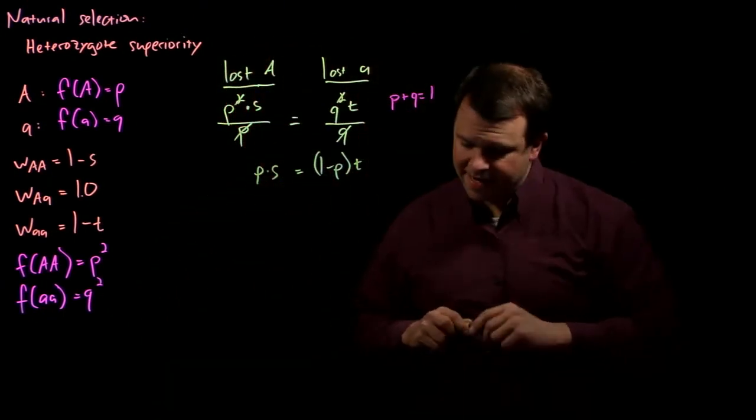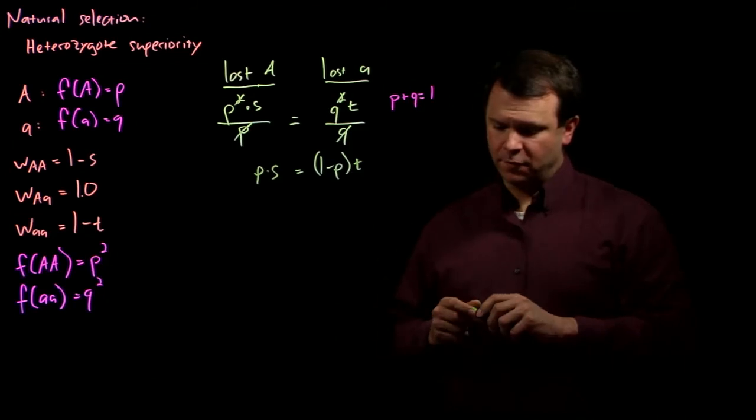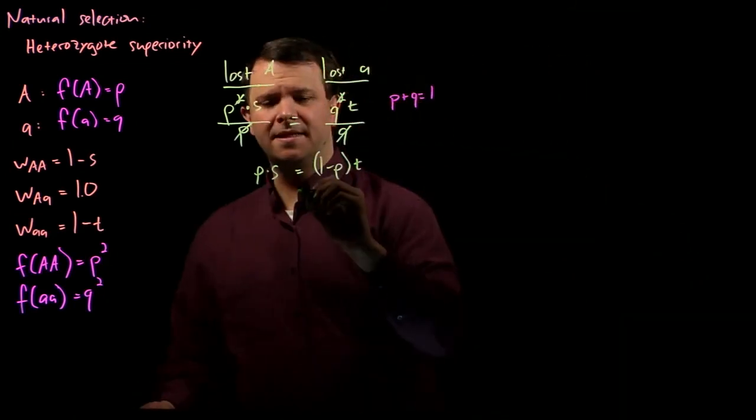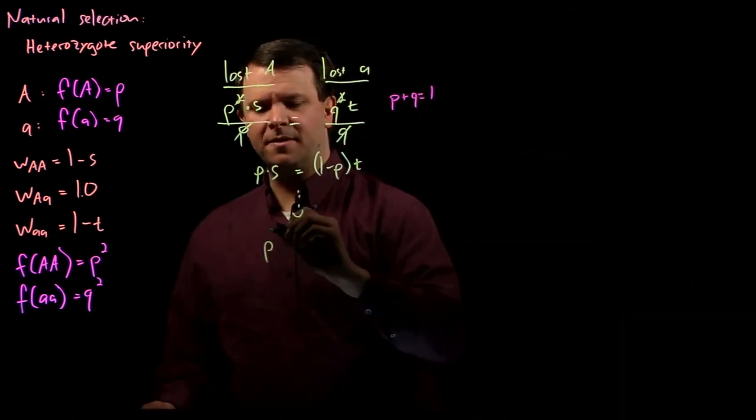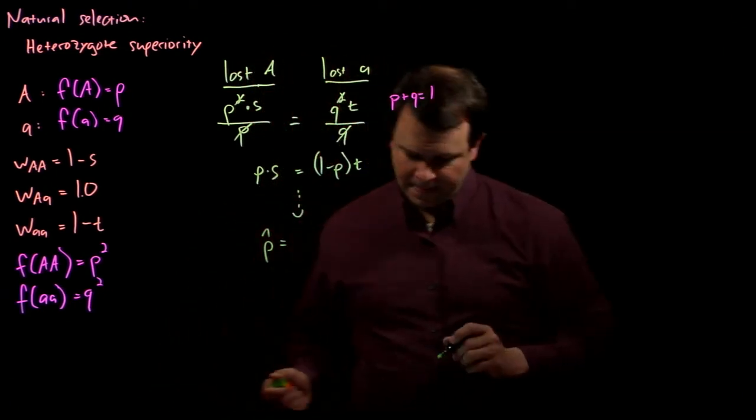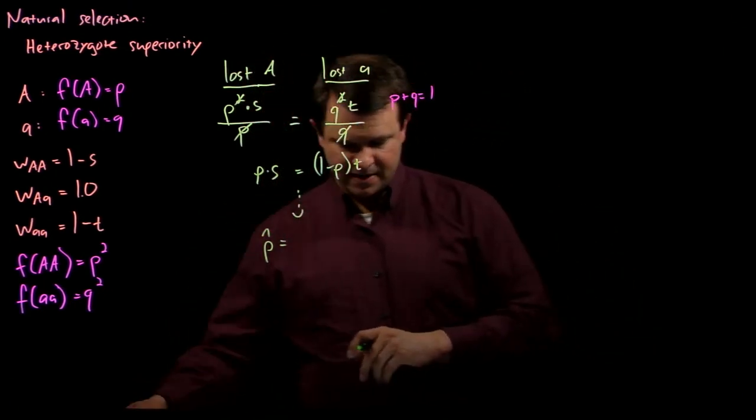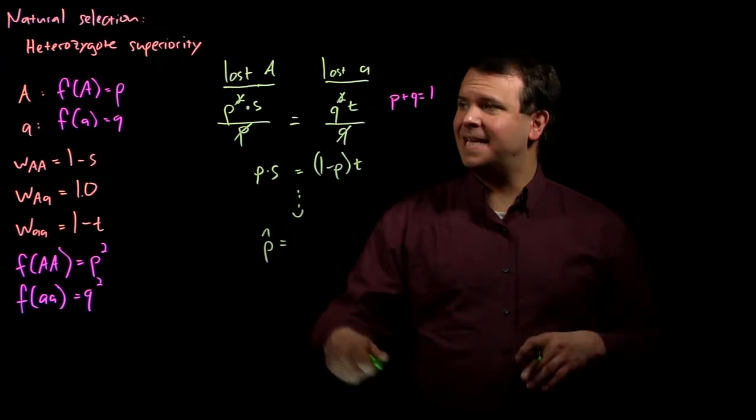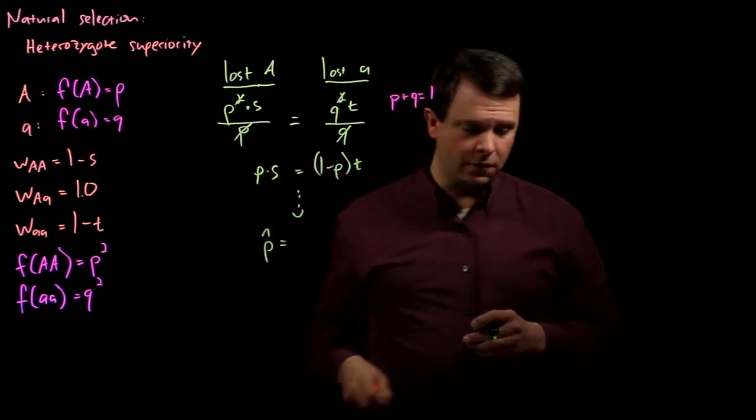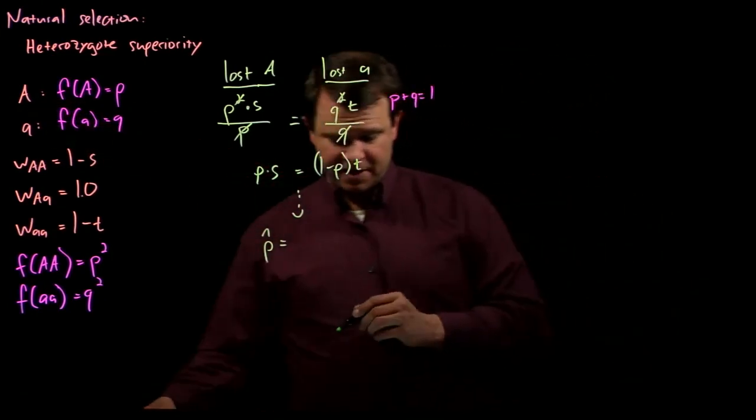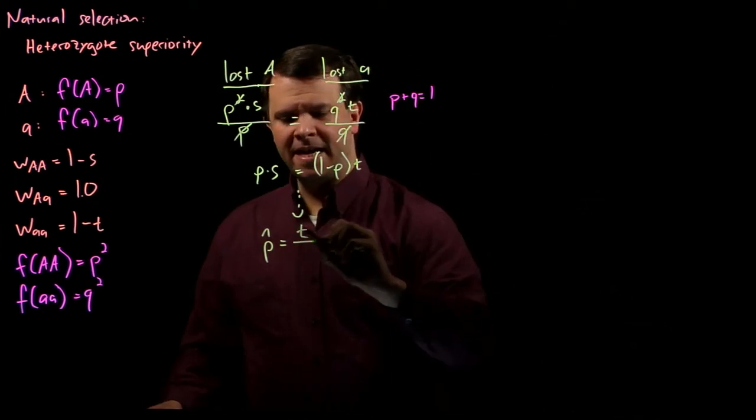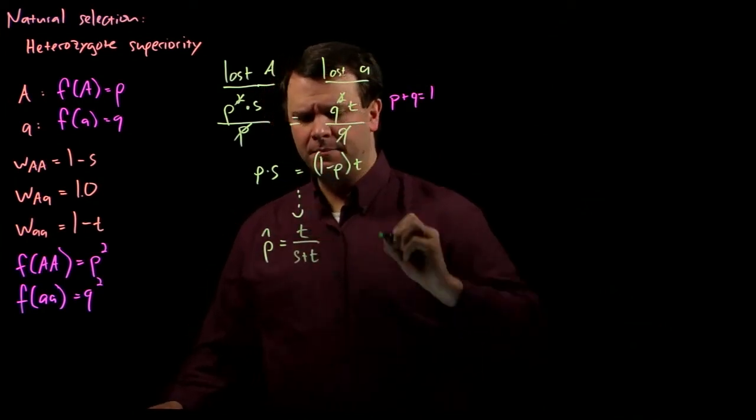And now, we can simply solve for p. And so, after some algebra, we find that p-hat, the equilibrium frequency for our allele big A, is t over s plus t.